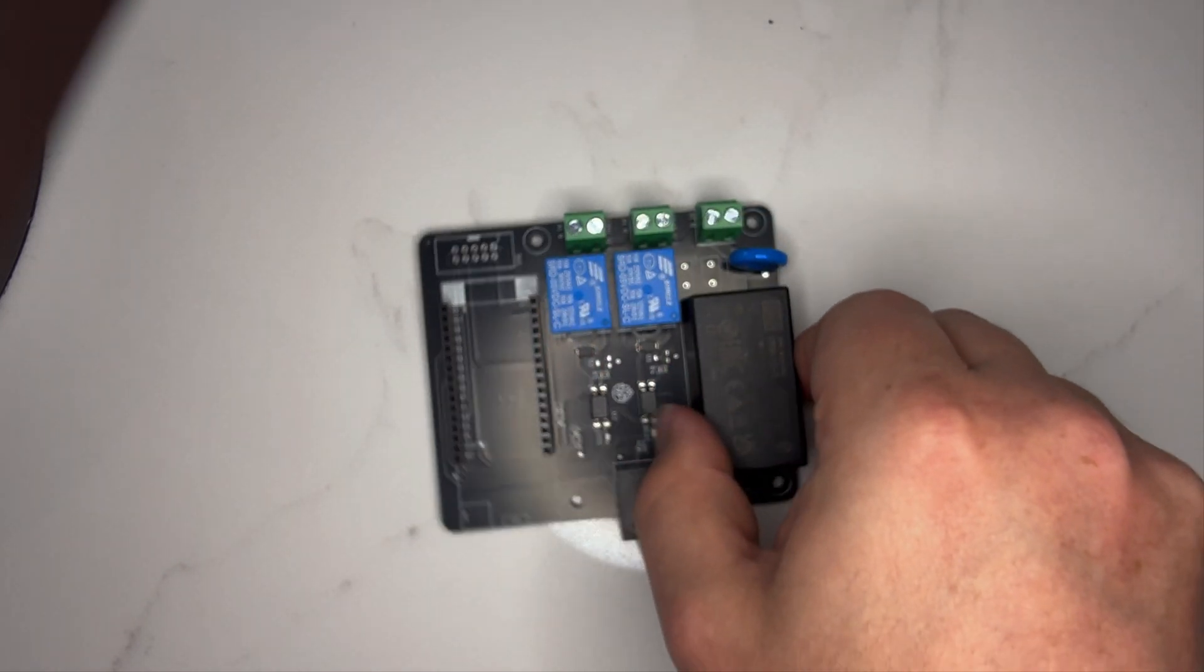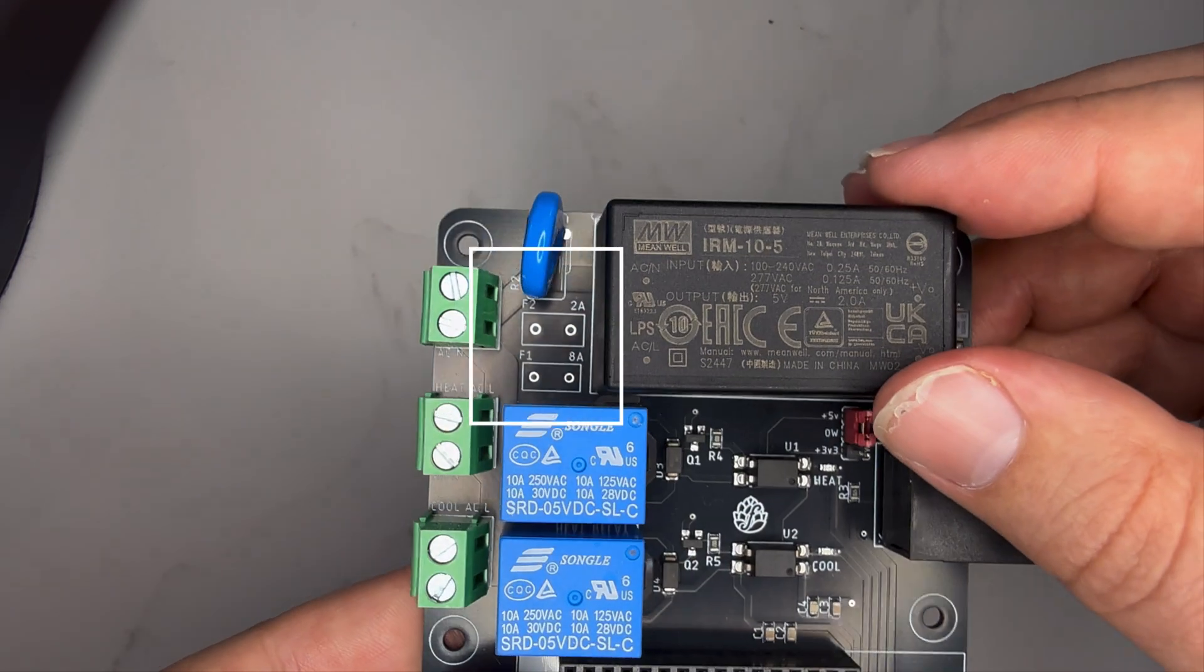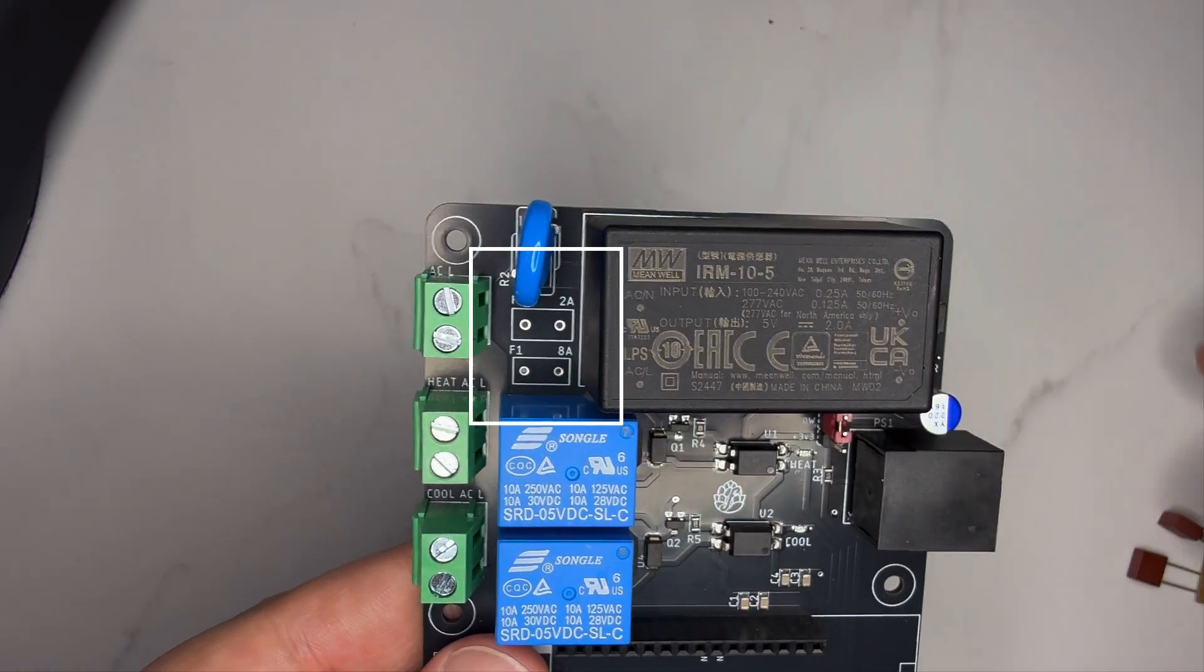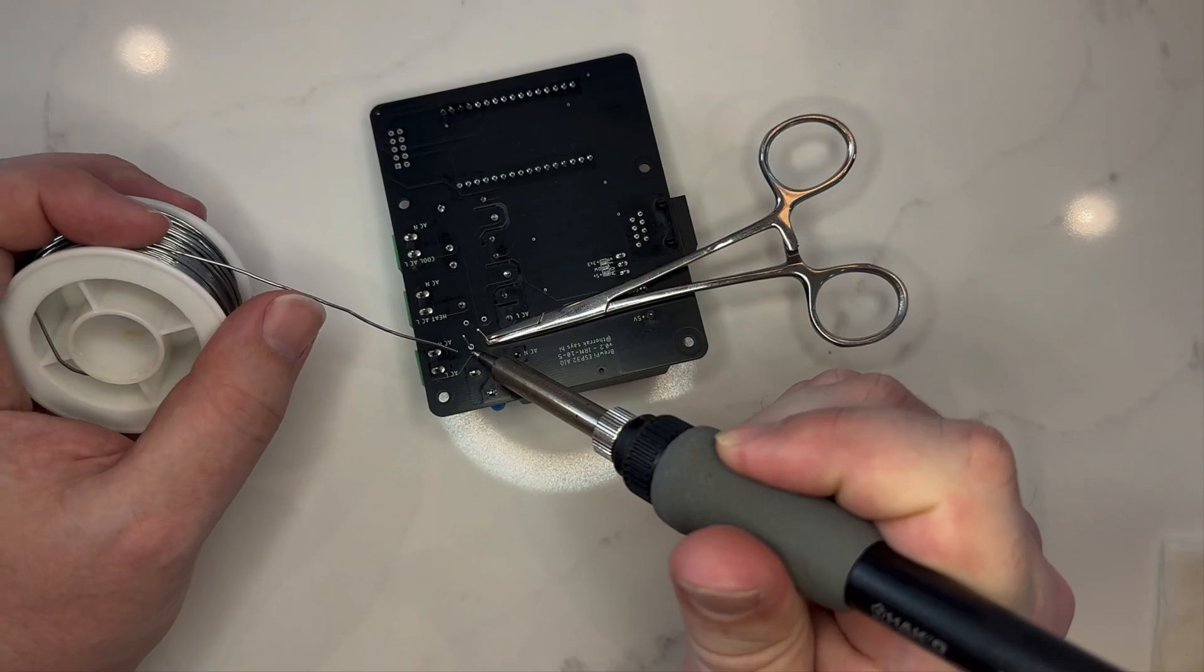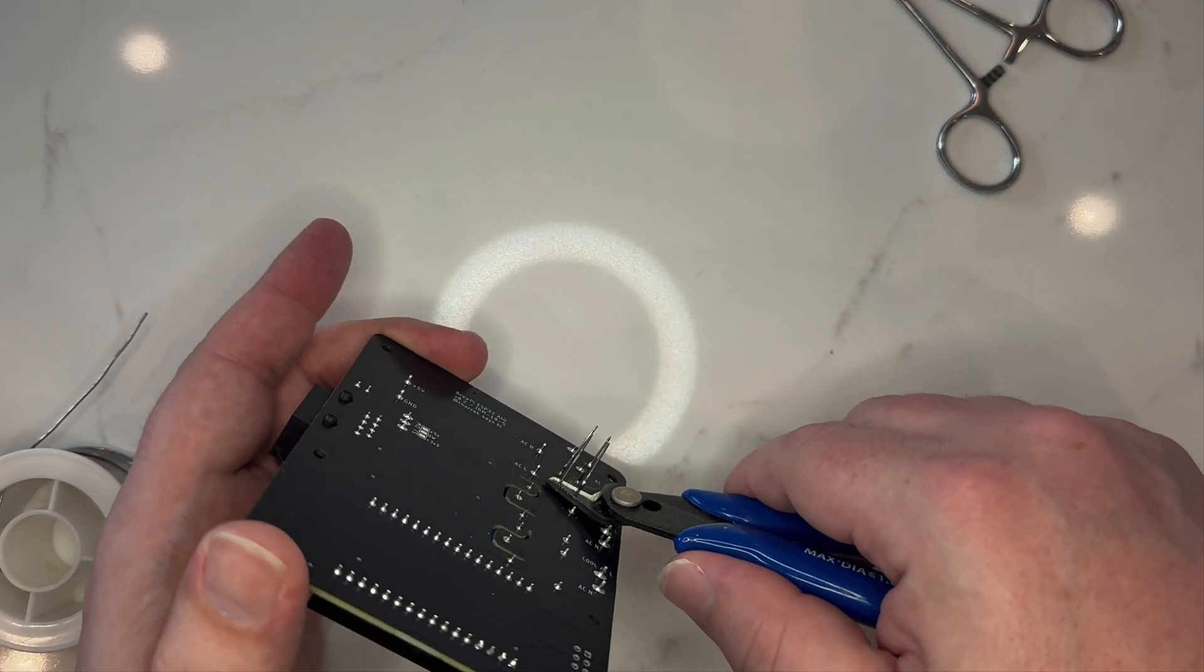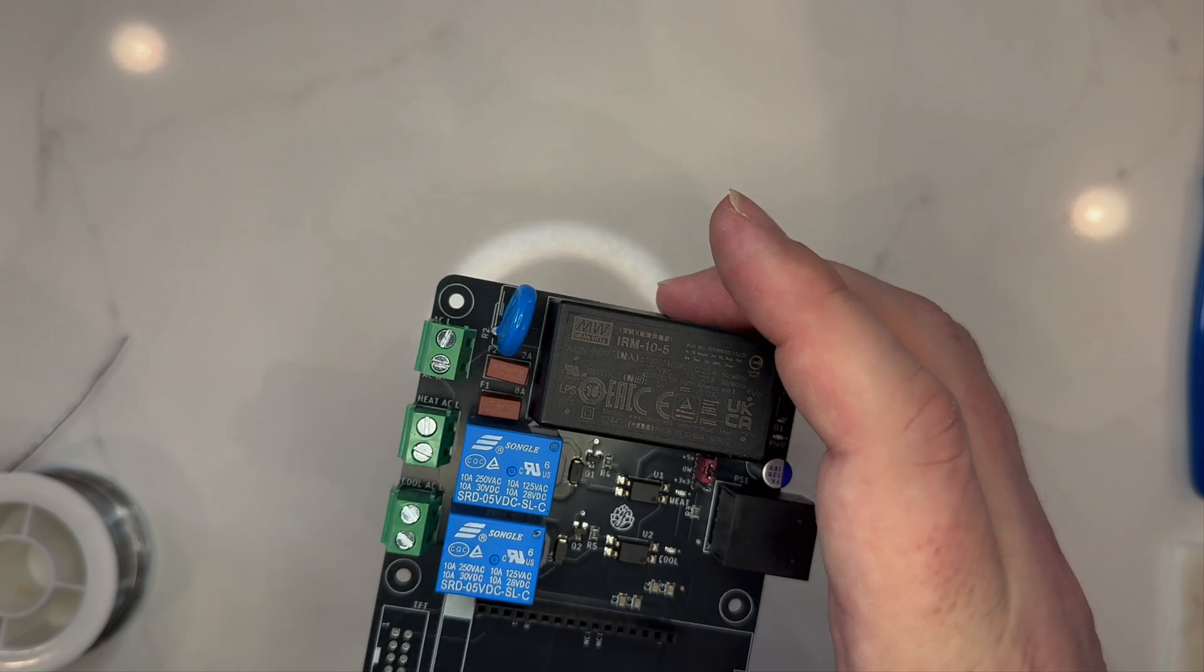To solder on these fuses, find the holes labeled 2A and 8A. For the 2A and 8A fuses respectively, insert the fuses, use something to hold the leads in place, and solder. Finally, clip off the excess leads, and your PCB is ready for use.